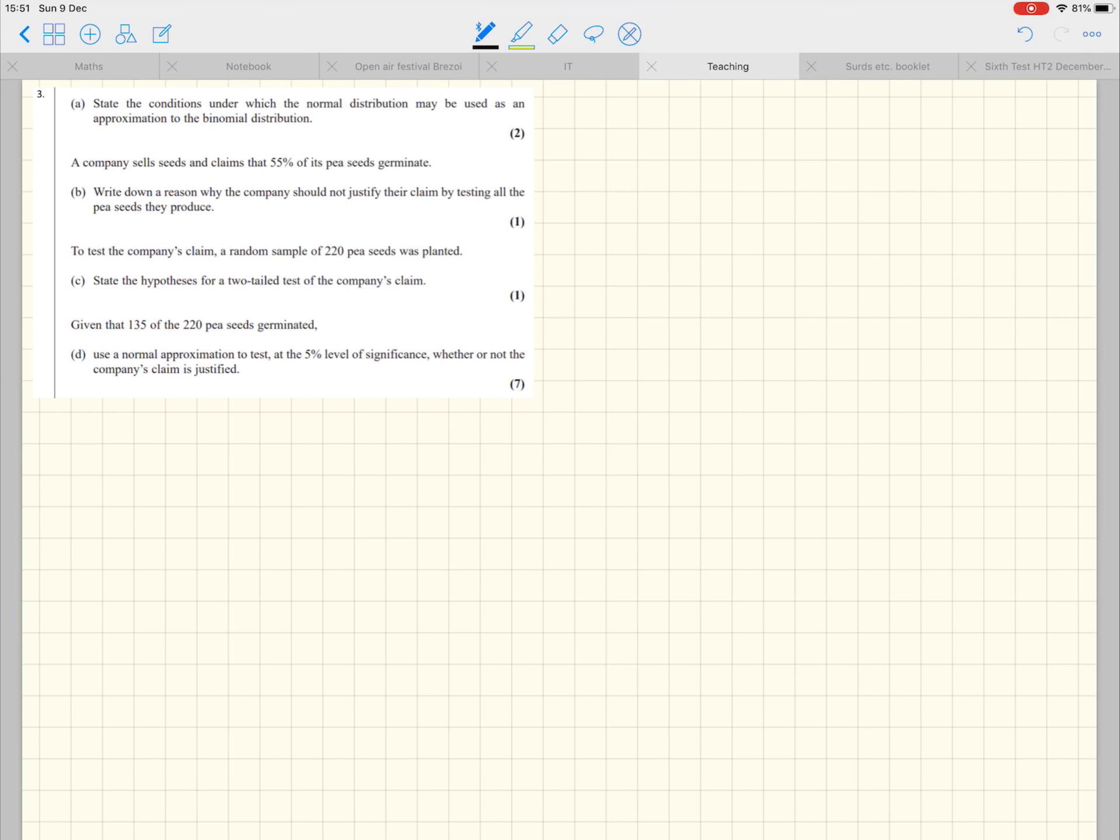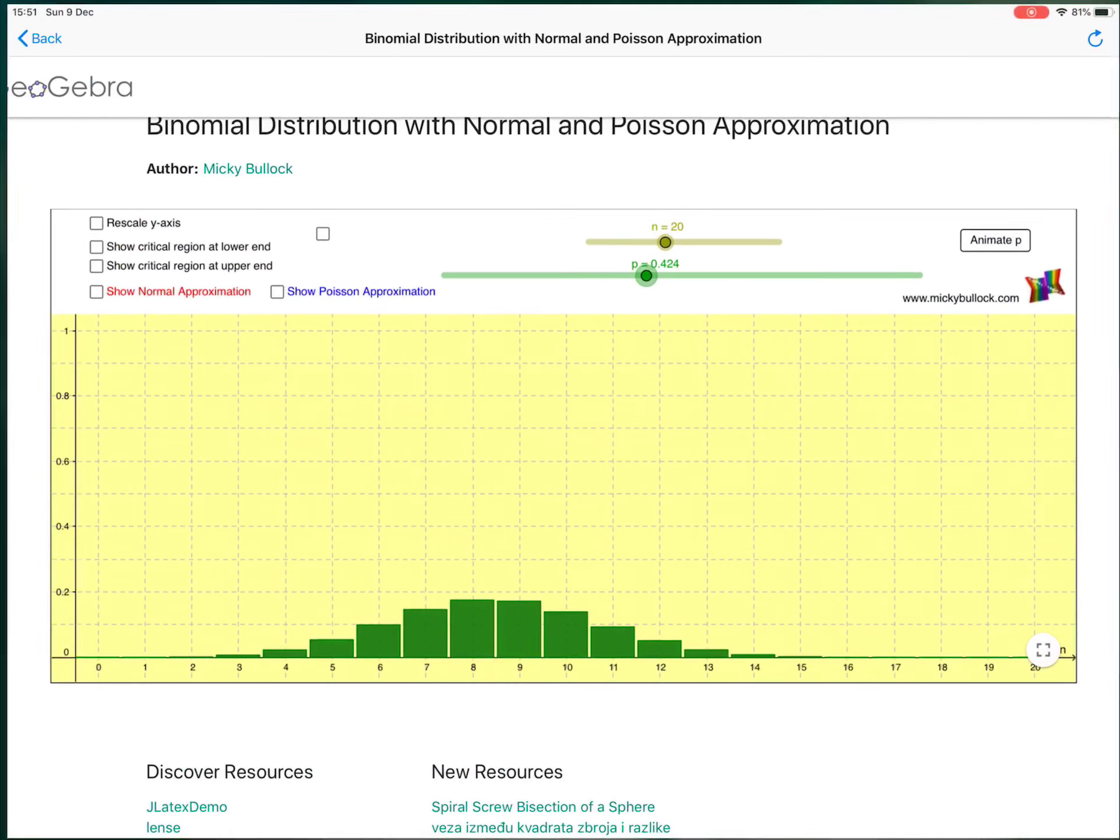Question three. First we have to state the conditions under which the normal distribution may be used as an approximation to the binomial distribution. Well, these you need to learn by heart, but since we're here, let's just consider why it's true.